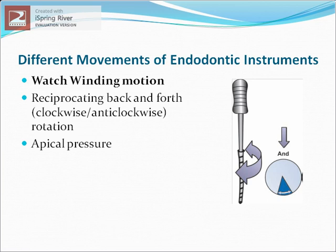Watch-winding motion is a reciprocating back-and-forth clockwise and anti-clockwise rotation of the instrument. The rotation is assisted by light apical pressure in order to move the file deeper into the canal. Watch-winding motion is useful for opening tight or calcified canals.